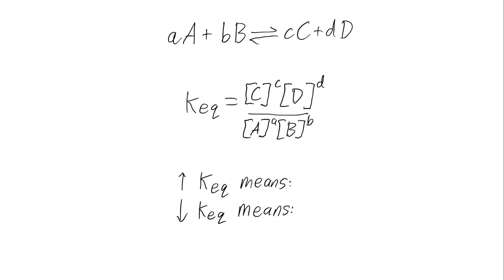In a reaction such as A and B in equilibrium with C and D, the equilibrium constant is the ratio of the concentration of the two products with the concentration of the two reactants.